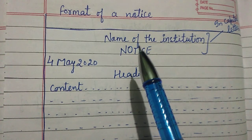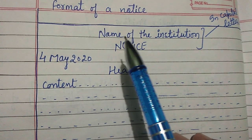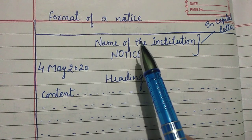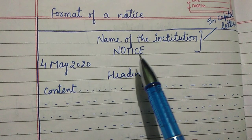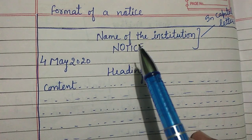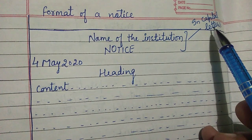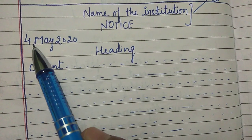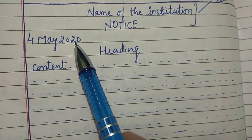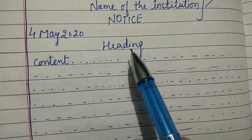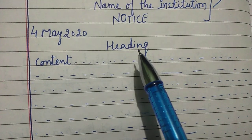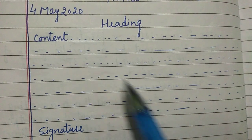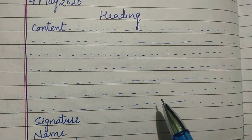Now, the format of a notice: in the middle of the first line, the name of the institution is written in capital letters. Under that, the word NOTICE is written in capital letters. To the left side of the page in the next line, the date is mentioned — for example, 4th May 2020. Under that, in the middle of the line, an appealing heading is written. Then in the next line, to the left side, the content is written — it must not exceed 50 words.